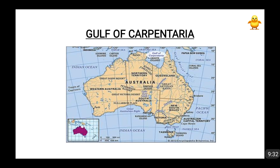Then comes the Gulf of Carpentaria. This is a part of northern Australia. To the north of the Gulf of Carpentaria lies the Arafura Sea. It is located at the northern edges of Australia.